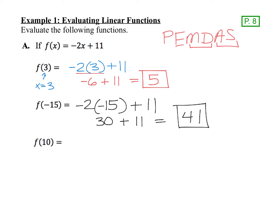Next, we have f(10). I'm going to replace my x with 10: negative 2 times 10 plus 11. Start with the multiplication — negative 2 times 10 is negative 20. Then add 11, and you'll end up with an answer of negative 9.